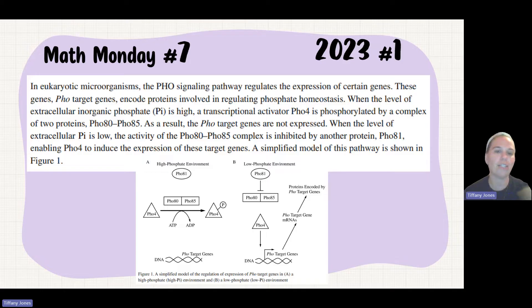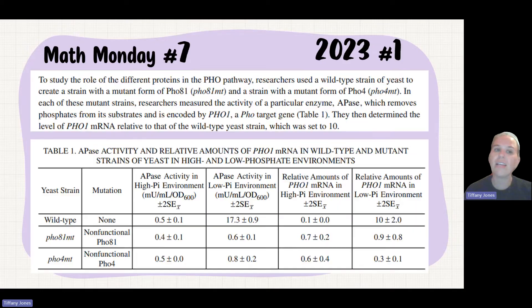You have a diagram that illustrates the information given in your prompt. They talk about a certain experiment. The experiment is determining the role of different proteins that are in that pathway. They use wild type strain as well as two different mutants.